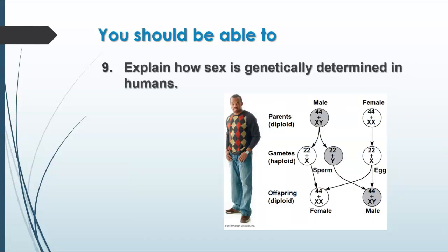In humans, sex is determined by the X and Y sex chromosomes. Females have two X chromosomes, so every egg cell produced by females has an X chromosome. Males have one X and one Y chromosome. The Y is much smaller than the X and doesn't have the same genes — the genes on the X are necessary for development, whereas the genes on the Y are strictly for maleness. Sperm cells produced by males have either an X or a Y, and that determines the gender of the offspring. If the zygote receives an X-chromosome sperm, it becomes a girl; if it receives a Y-chromosome sperm, it becomes a male.